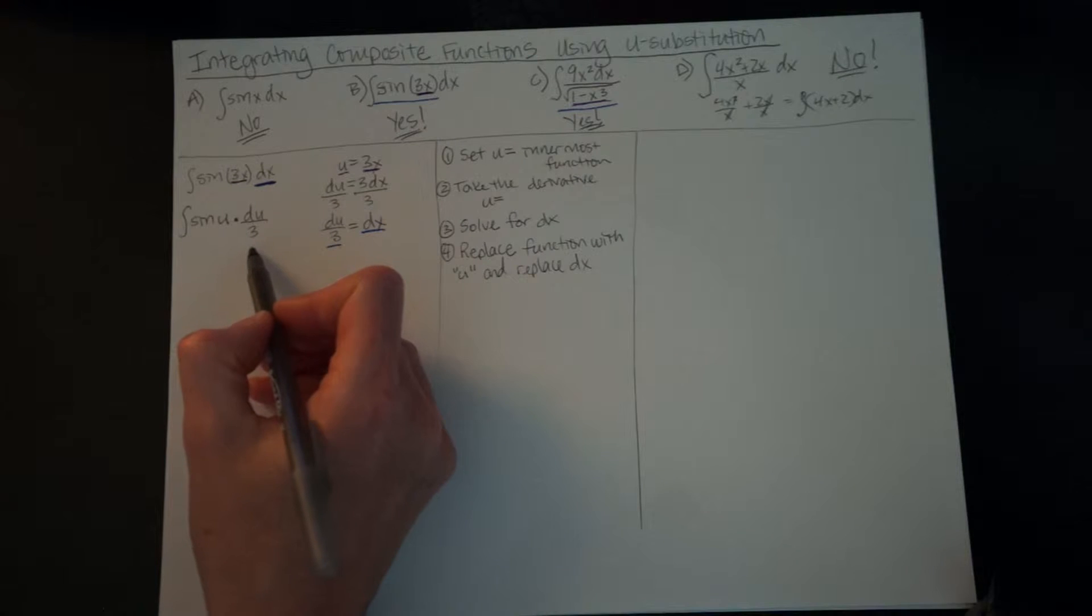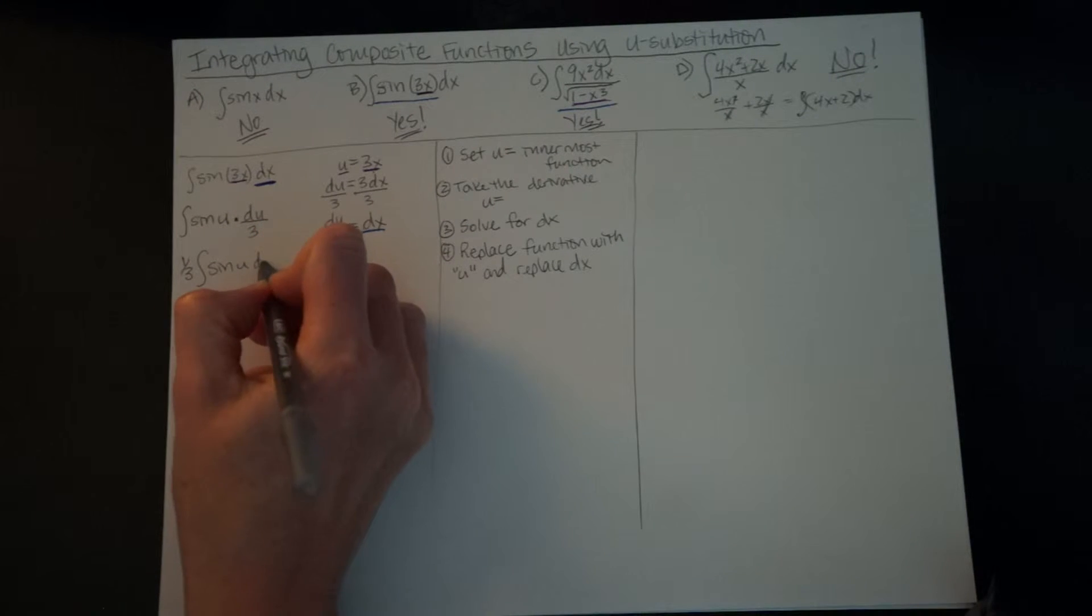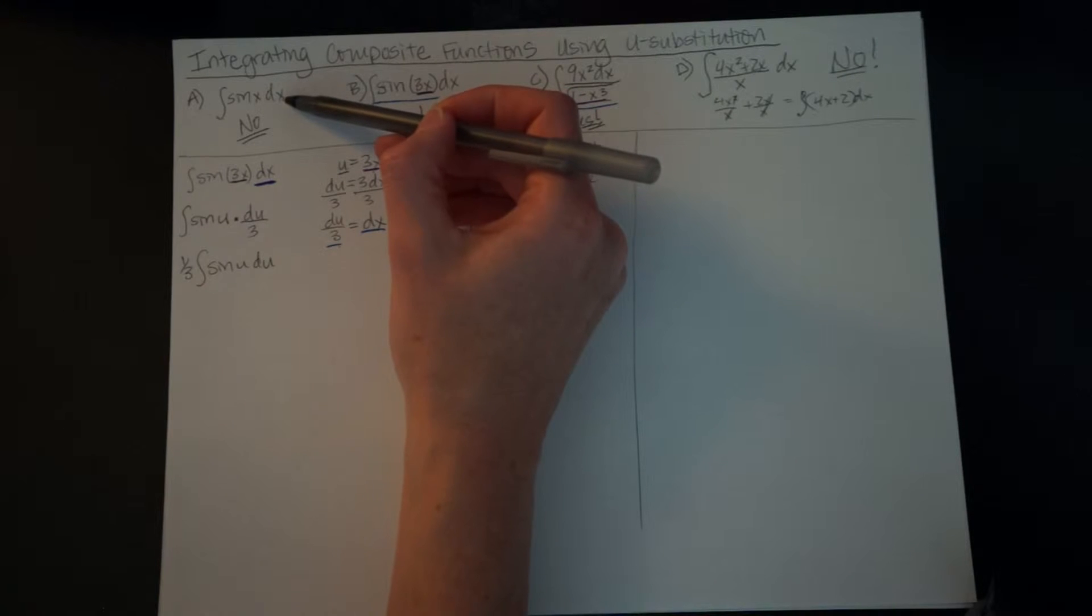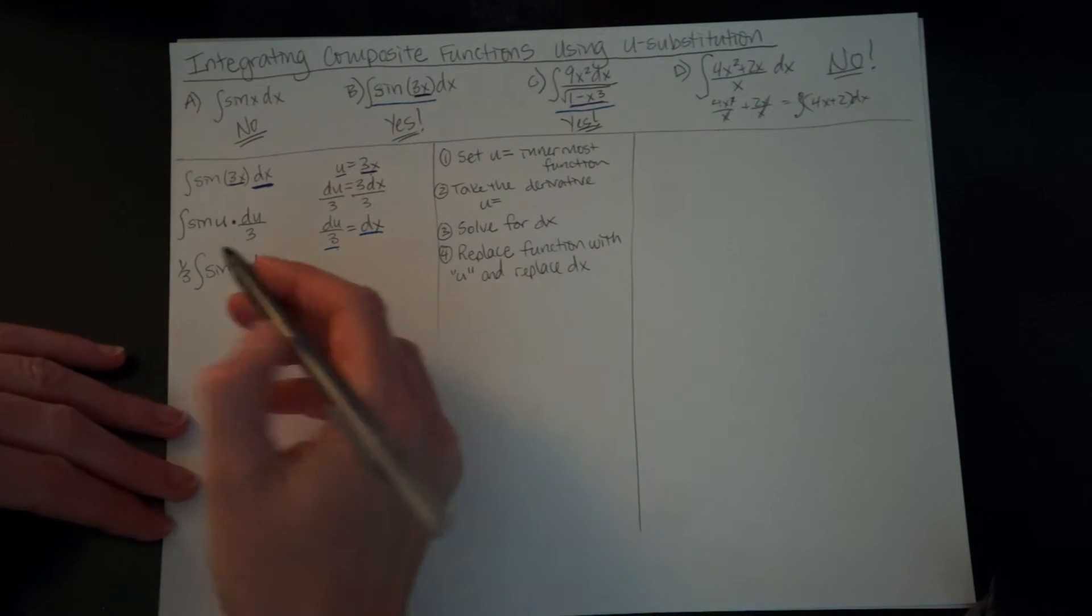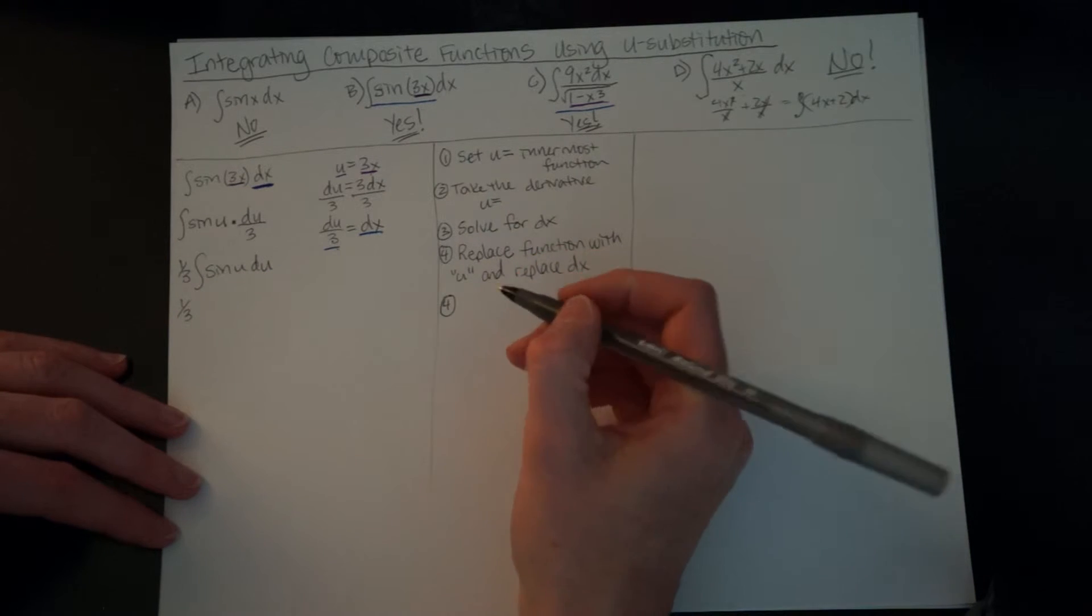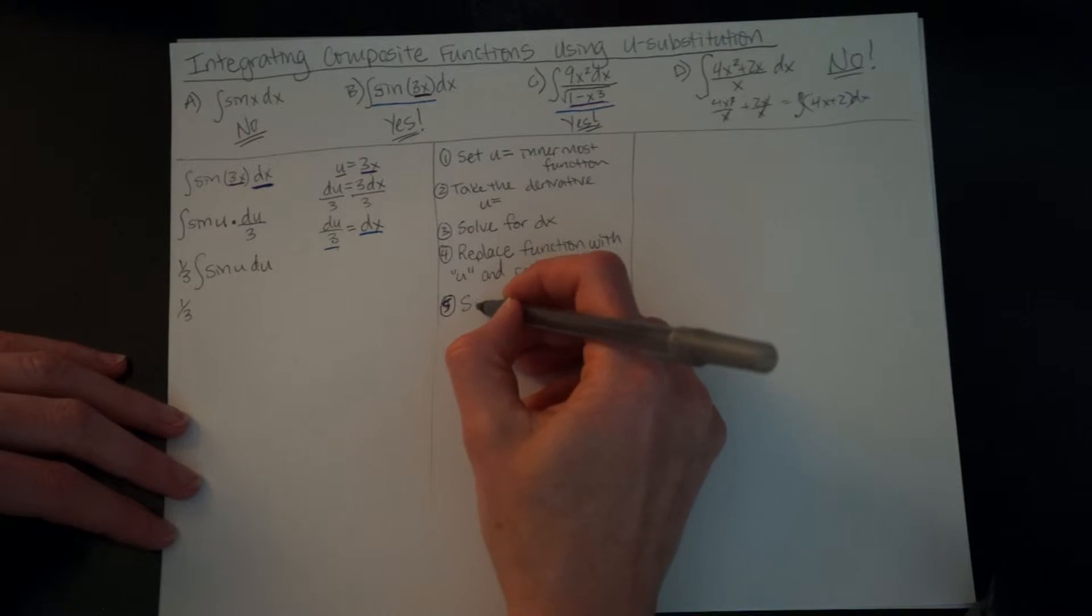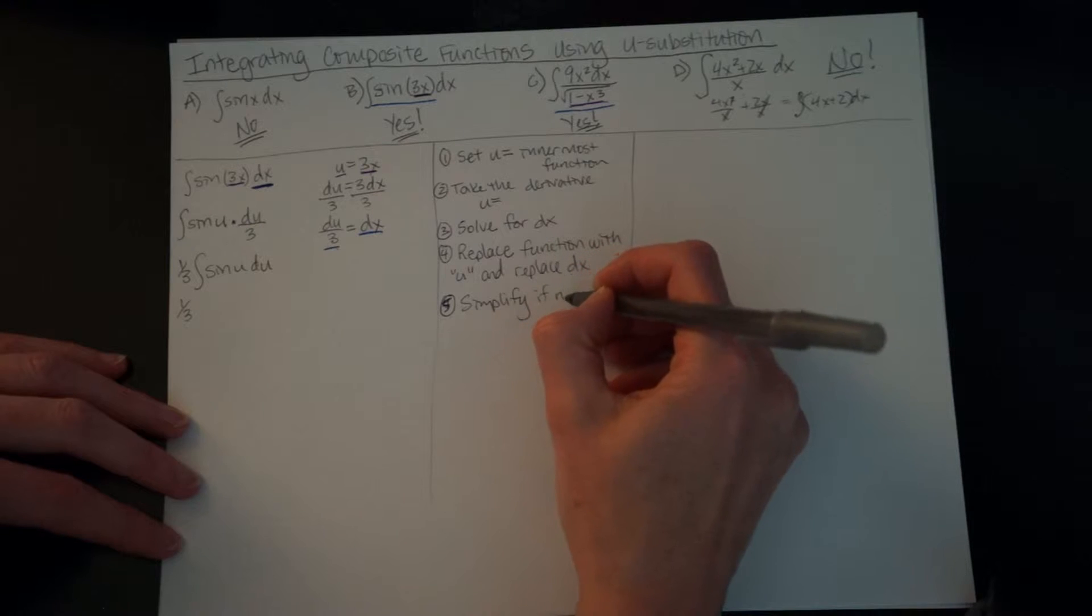All right, so this looks a little complicated because of this 3 down here in the denominator, but that's just a one-third. That's a constant I'm going to bring out front here. So then we have sine of u du. This function is so similar to this one. The only thing that's different is our variable. So the integral then of sine of u, so that's our next step here. Oops, not another 4. How about a 5? Okay, so 5 we simplify. We kind of did that as I was talking there. Simplify if necessary.